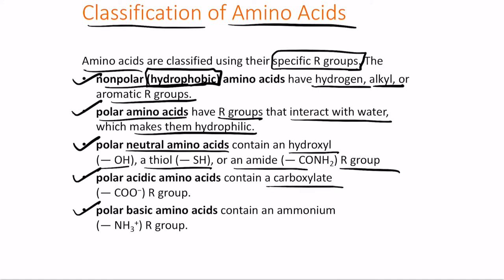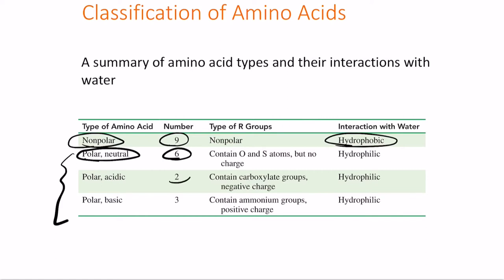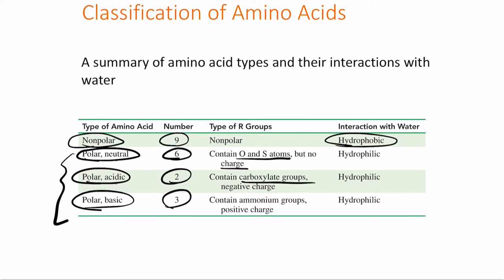Polar acidic amino acids contain an additional carboxylate ion (COO−) in their R group, giving them a negative charge. Polar basic amino acids contain an ammonium R group, giving them a positive charge. In summary: of the 20 amino acids, 9 are nonpolar (hydrophobic), 6 are polar neutral (containing oxygen or sulfur with no charge), 2 are polar acidic (carboxylate, negative charge), and 3 are polar basic (ammonium, positive charge).